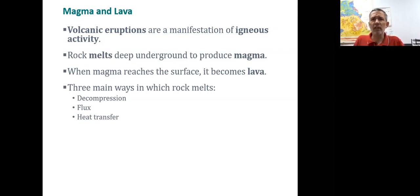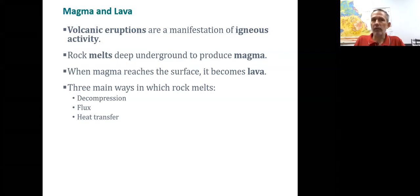The next way is a little more difficult to visualize unless we look at something like solder. Solder is made up of lead and zinc. If you were to take a soldering iron and touch it to a piece of lead, it wouldn't melt. But with the added flux, the melting point is going to be lower and you have solder.